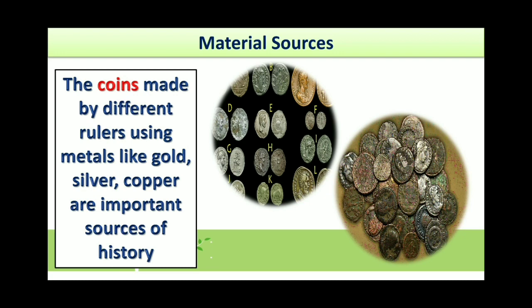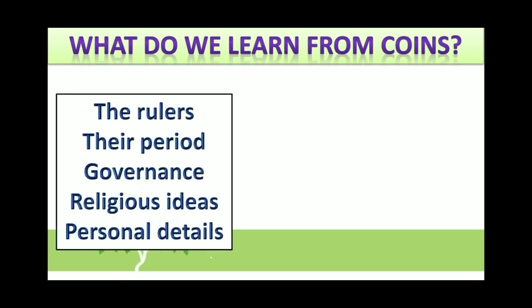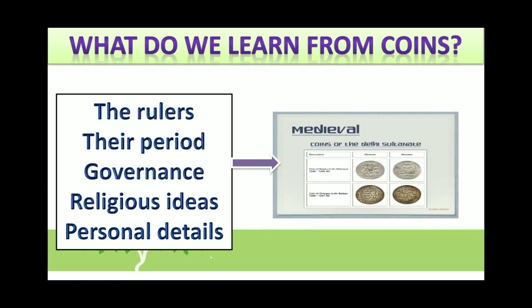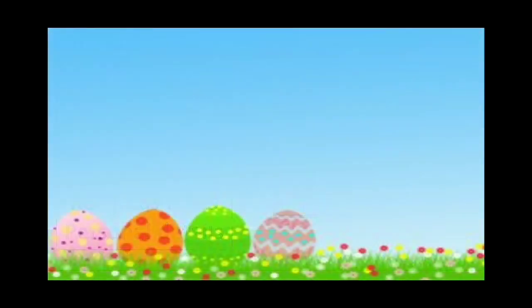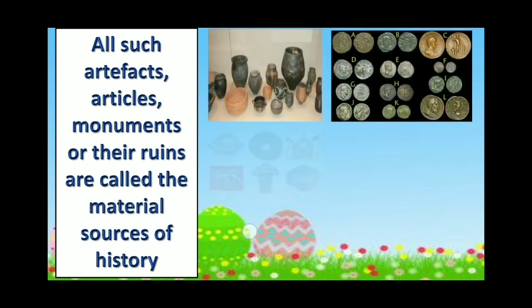By the metal used in coins, we can also think about the development of that period. Here you can see coins from different periods — one coin with Mahatma Gandhi's picture. What do we learn from coins? We learn the rulers, their period, governance, religious ideas — because something related to religion was always on the coin — and personal details of that particular king. All such artifacts, monuments, and their ruins are called the material sources of history.